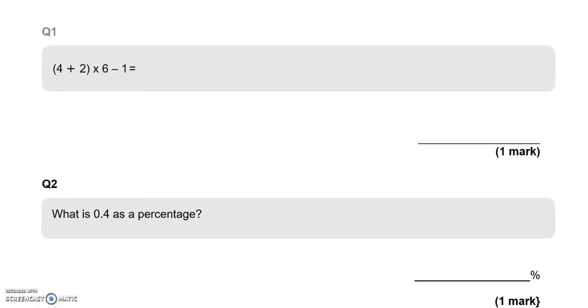So question 1, we've got 4 add 2 in brackets, multiplied by 6, take away 1. What's that equal to? So we've got to apply BIDMAS.